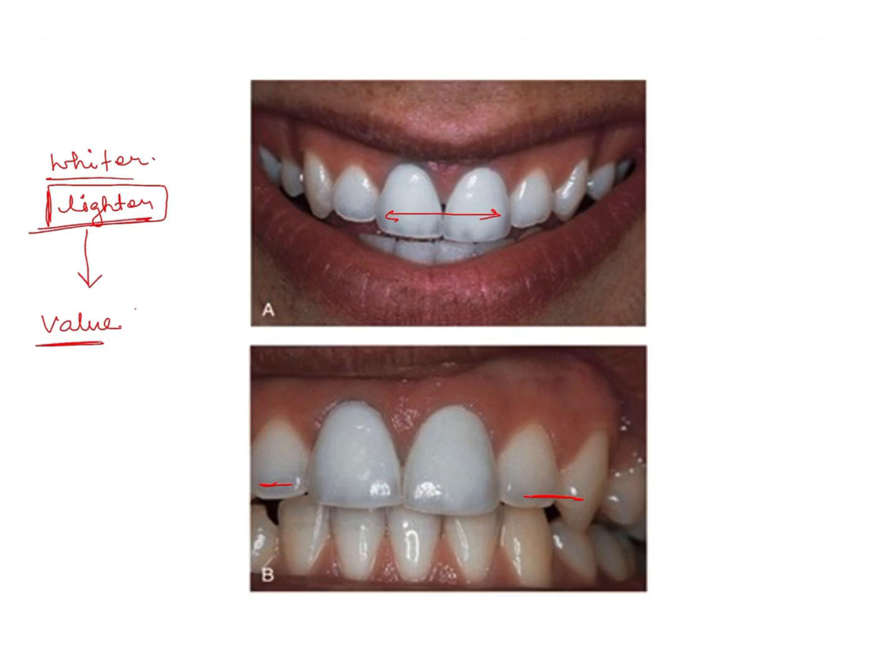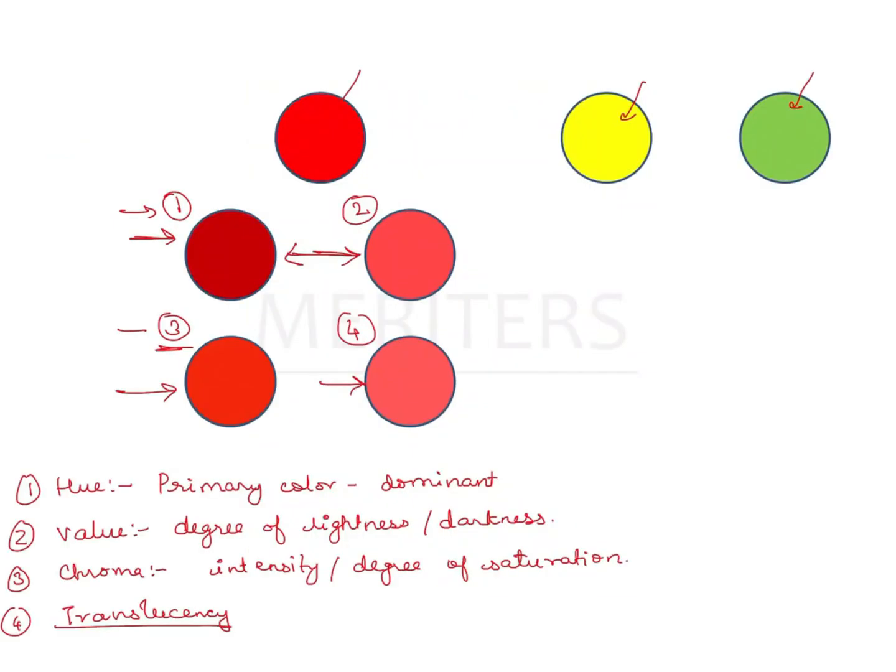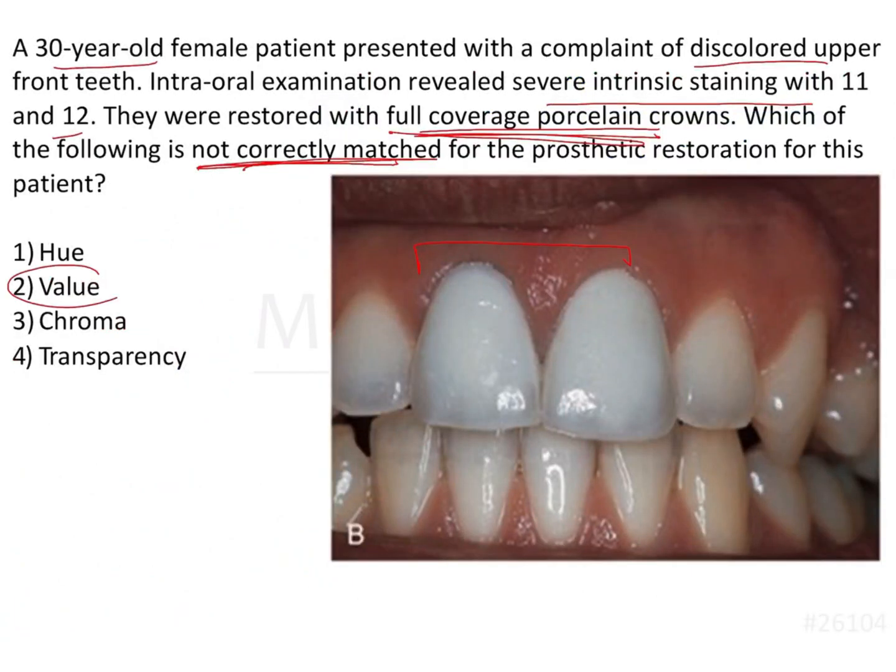Now if it was more intensely stained or less intensely stained, that would be chroma. Depending upon how intense the color is, that is the chroma. So here it is because of the lightness and darkness that is the problem. The correct answer to this question is value.